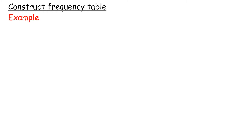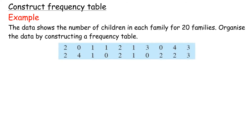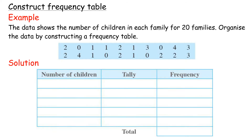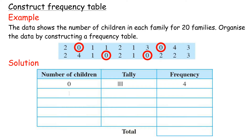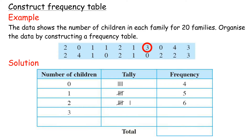After classifying the data, we construct a frequency table. Example: The data shows the number of children in each family for 20 families. Organize the data by constructing a frequency table. Solution — Number of children: 0 (frequency 4), 1 (frequency 5), 2 (frequency 6), 3 (frequency 3), 4 (frequency 2).